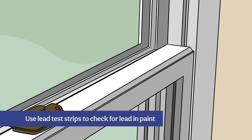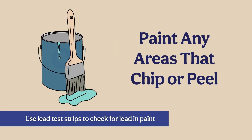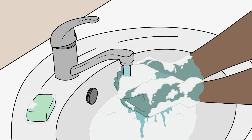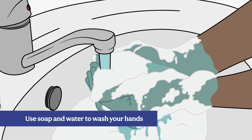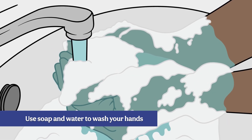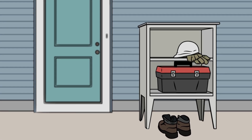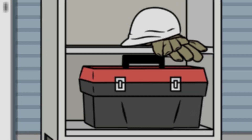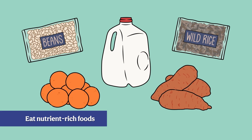Use lead test strips to check for lead in paint. If your paint contains lead, paint over it and regularly paint any areas that chip or peel. If you or a family member has a job or hobby that uses lead, use soap and water to wash your hands and remove any lead before touching other surfaces, change into clean clothes before coming home, and keep tools, equipment, and shoes out of the house. Eat foods rich in calcium, iron, and vitamin C, since these nutrients can help reduce how much lead the body takes in.